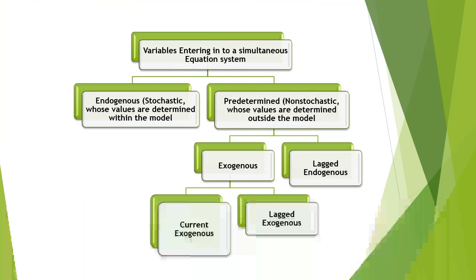This flowchart gives a summary of the types of variables entering into the simultaneous equation system. Variables are of two types: endogenous and predetermined. Endogenous variables are stochastic and their values are determined within the model; predetermined variables are non-stochastic and determined outside the model. Predetermined variables are further classified into exogenous variables and lagged endogenous variables, and exogenous variables are classified into current exogenous and lagged exogenous variables.